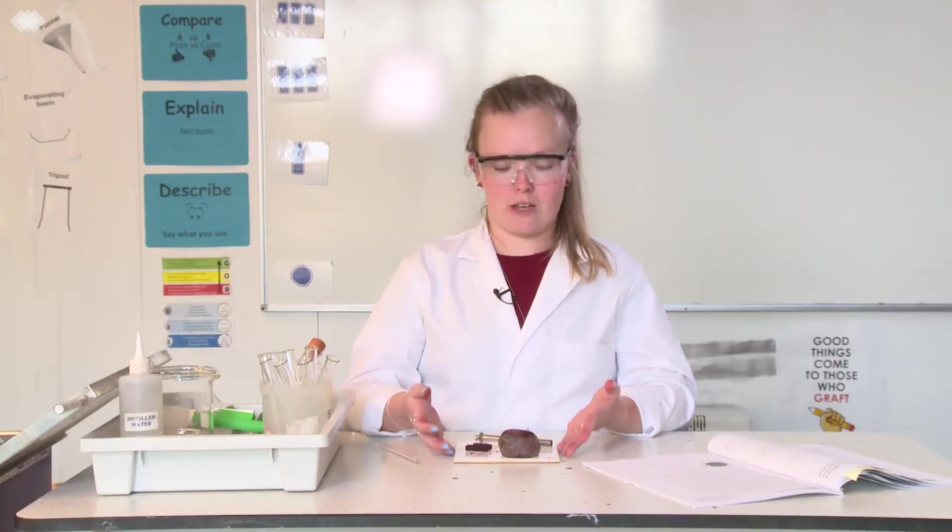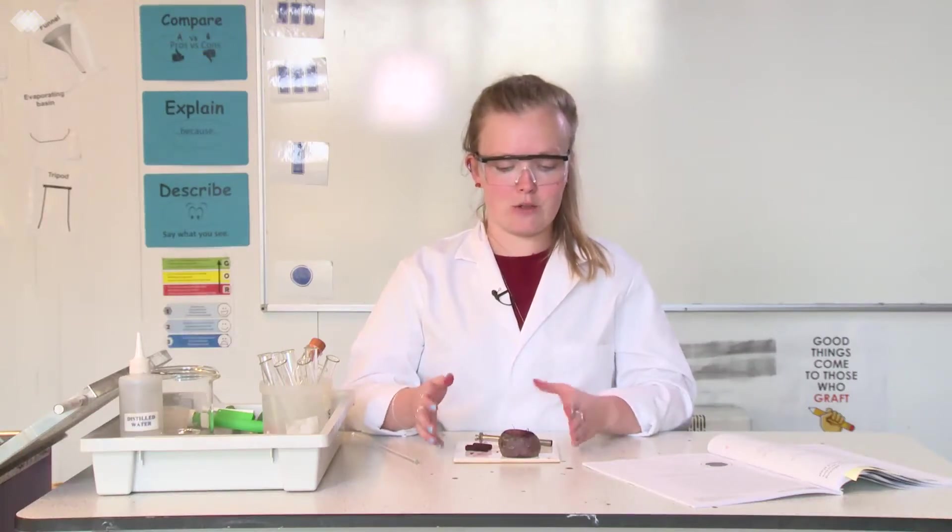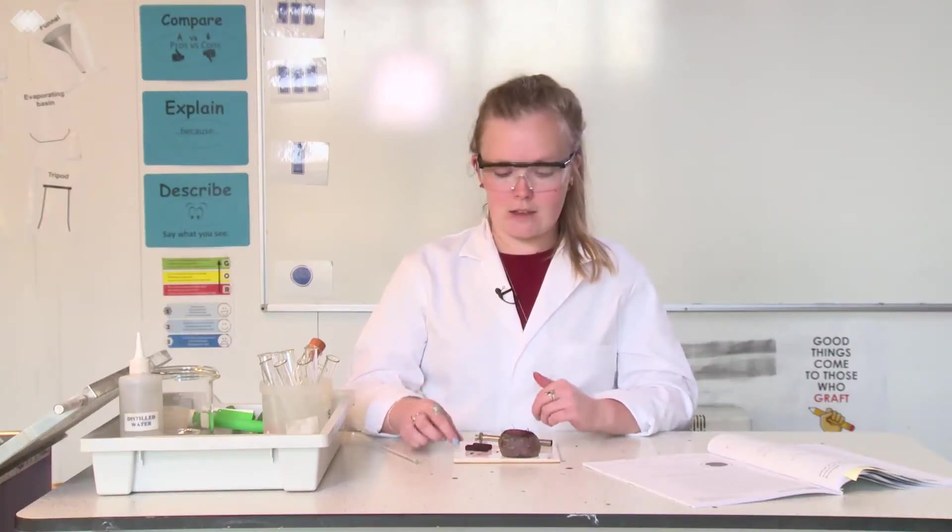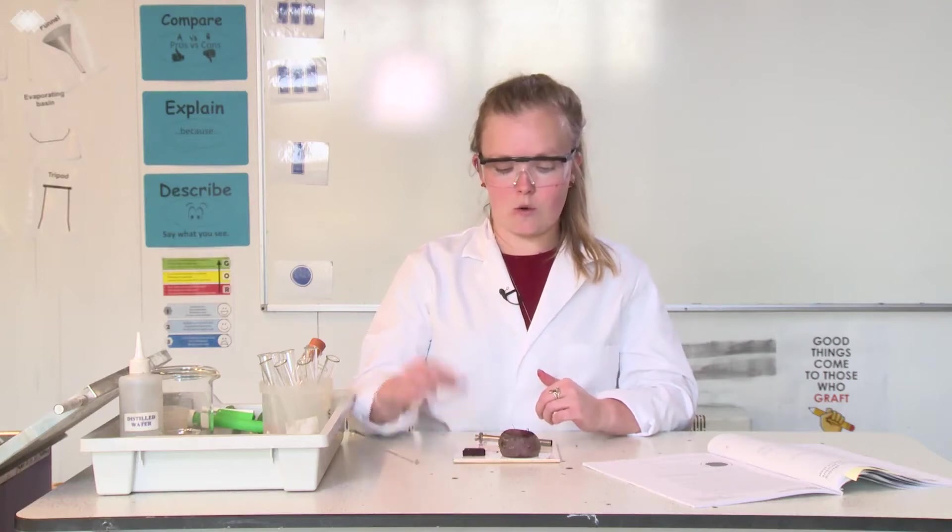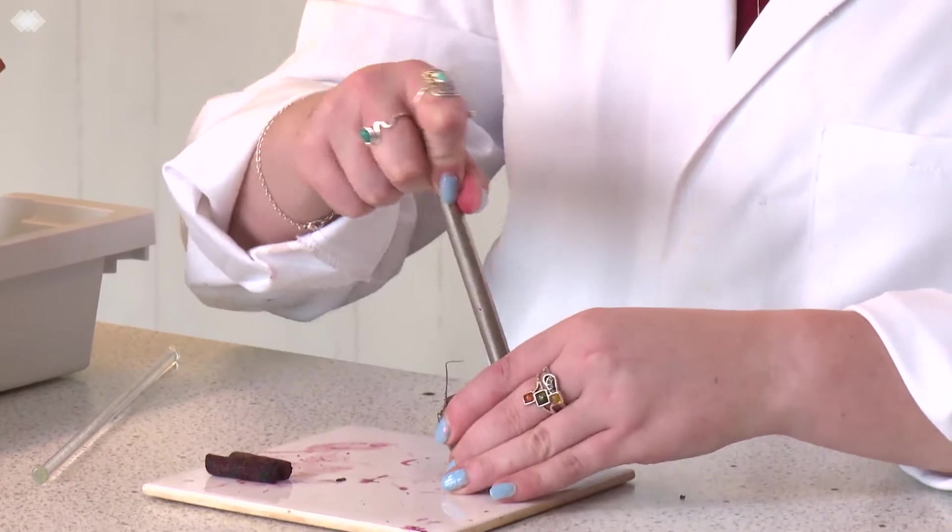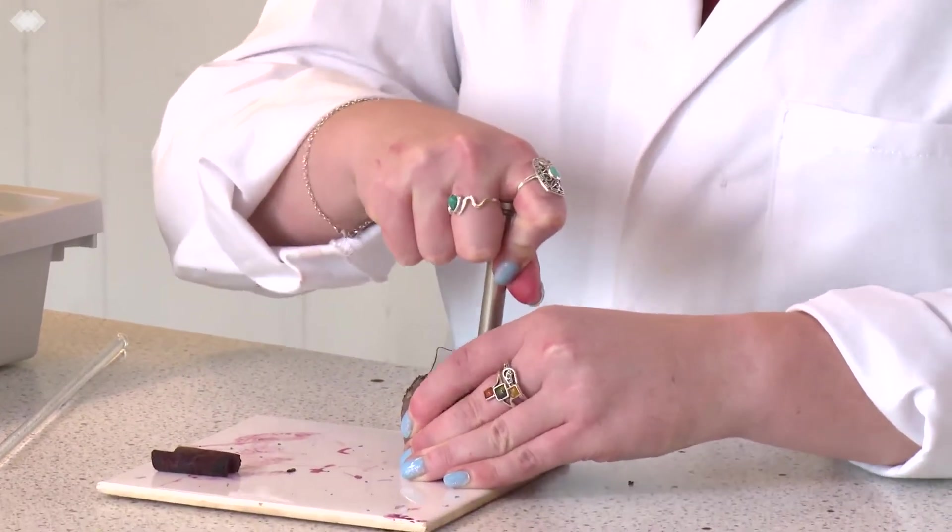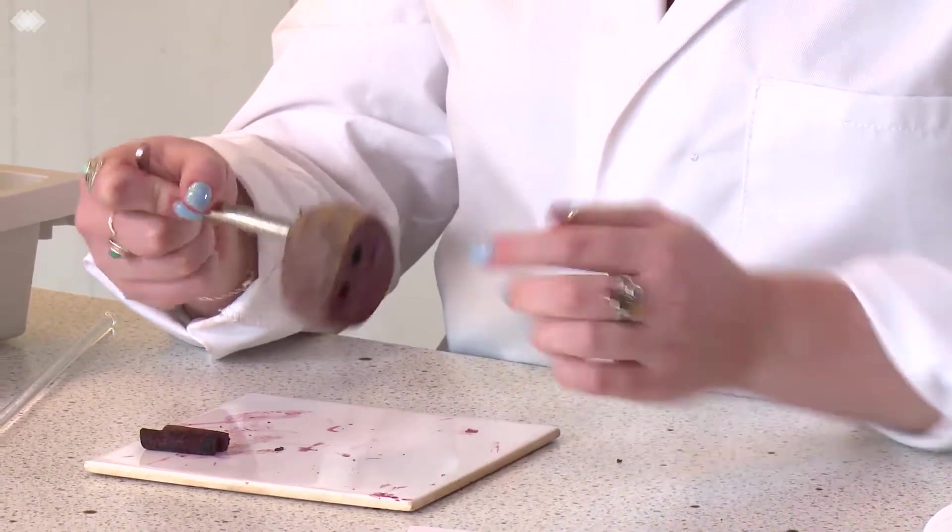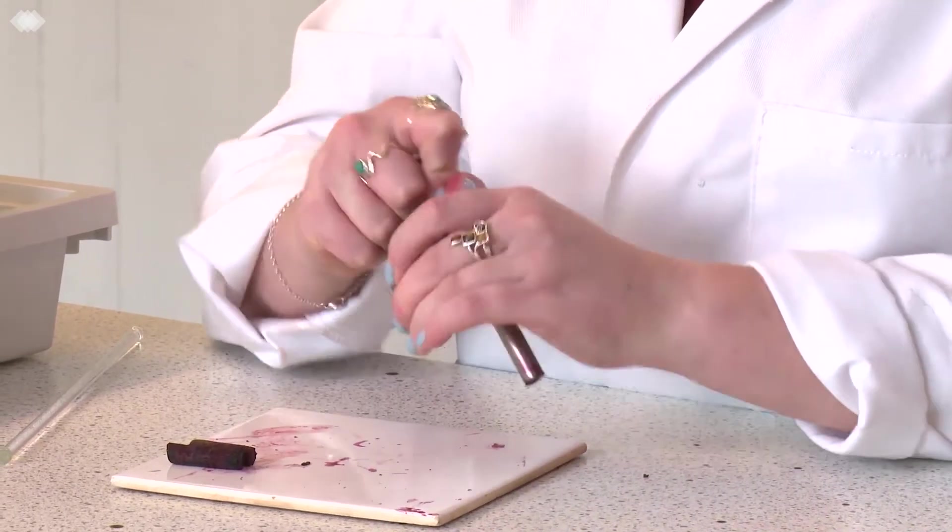We're going to look at how temperature affects permeability of membranes using beetroot. The first thing that we need to do is cut cores of beetroot using a corer. Cut into the white tile, not with your hand on the edge, for safety please.